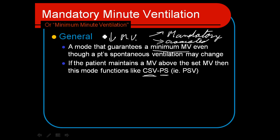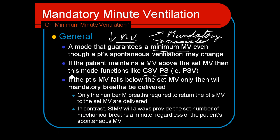It's really a safety net mode. If a patient goes apneic for some reason, or you have a patient with a very insecure ventilatory drive that may kick in and out, this mode assures they're going to get at least a minimum minute ventilation. As soon as they drop below that, the ventilator kicks in to give them either mandatory or assisted breaths. If they're spontaneously breathing and don't require it, it never kicks in.